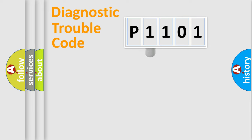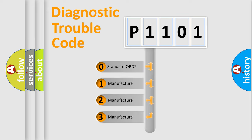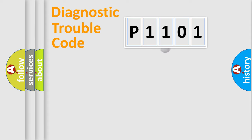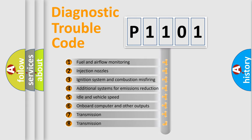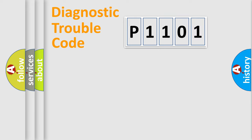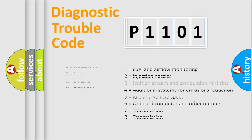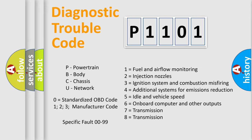This distribution is defined in the first character of the code. If the second character is expressed as zero, it is a standardized error. In the case of numbers 1, 2, or 3, it is a manufacturer-specific error. The third character specifies a subset of errors. The distribution shown is valid only for the standardized DTC code, and only the last two characters define the specific fault of the group.